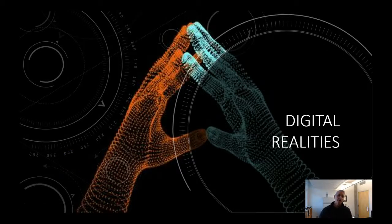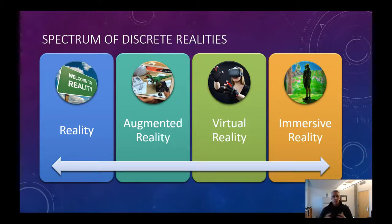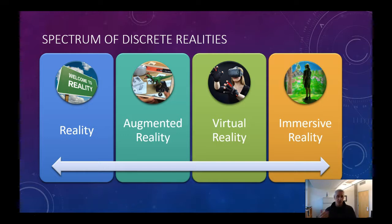Welcome. We're going to talk about digital realities now, and this goes to the next stage of what we define as reality and how we are redefining what we think of as reality. What I propose here is there's a spectrum of discrete realities that we're creating with our digital prowess. There are lots of arguments as to whether we should or shouldn't, but this is what's happening, so it bears in mind that we should be able to describe it in some cohesive way.